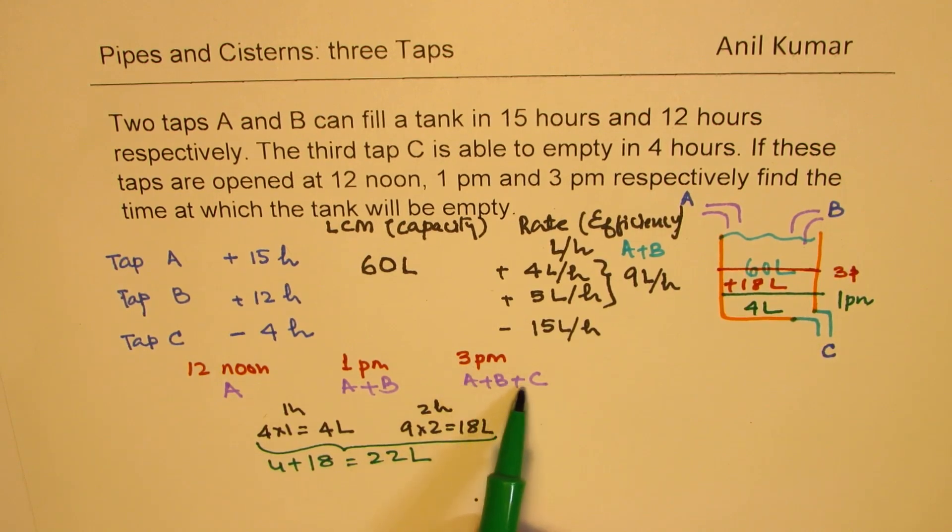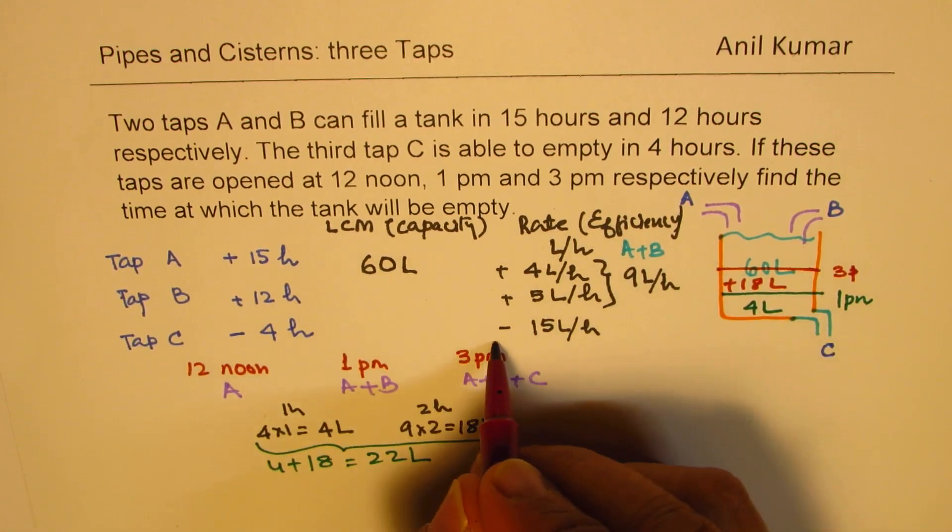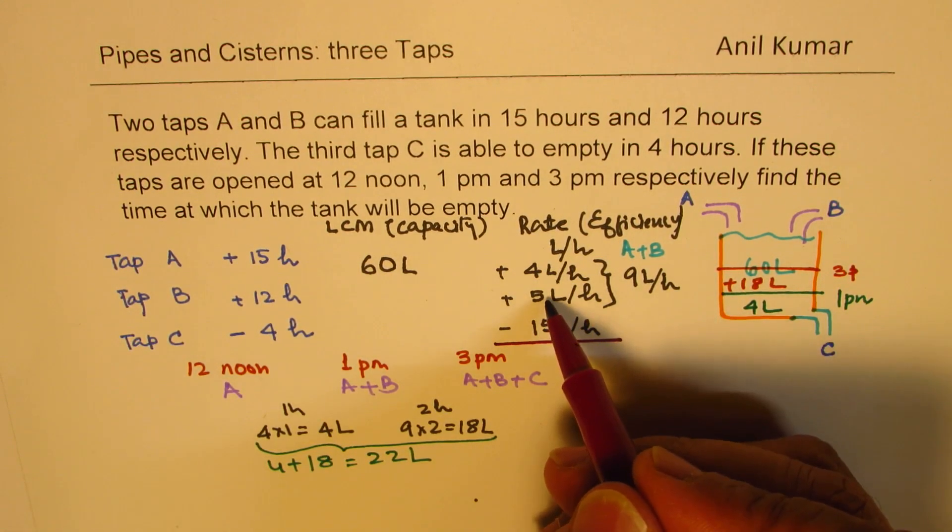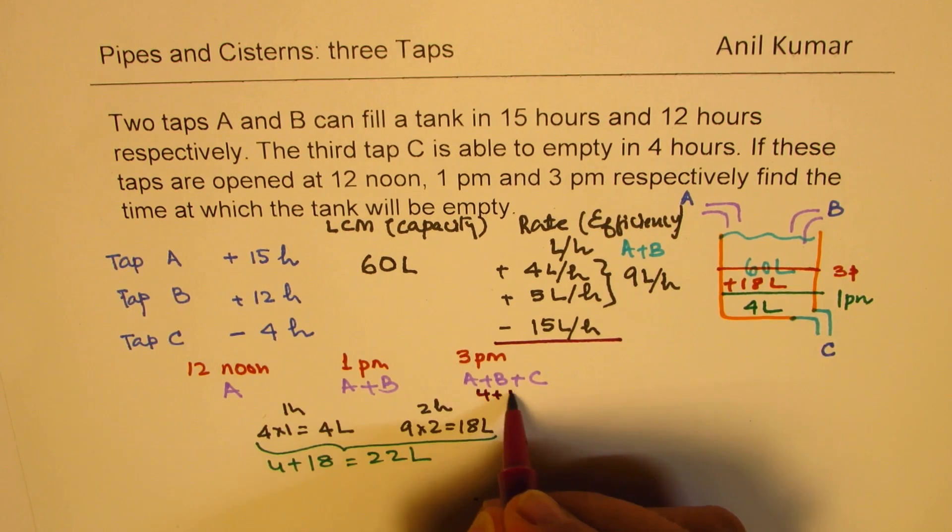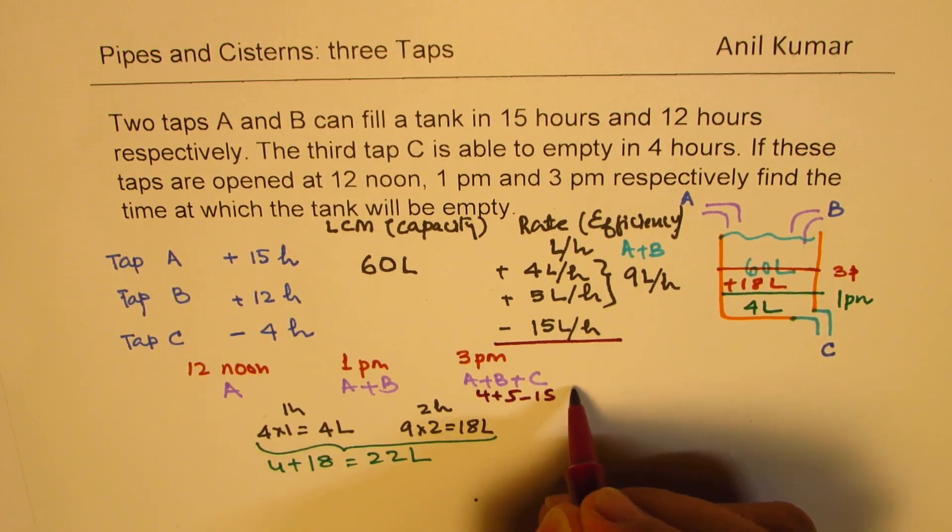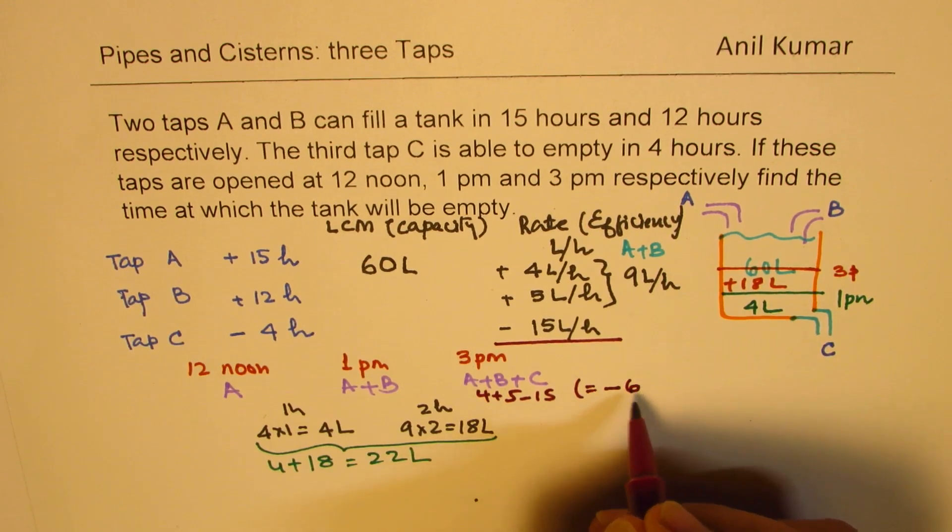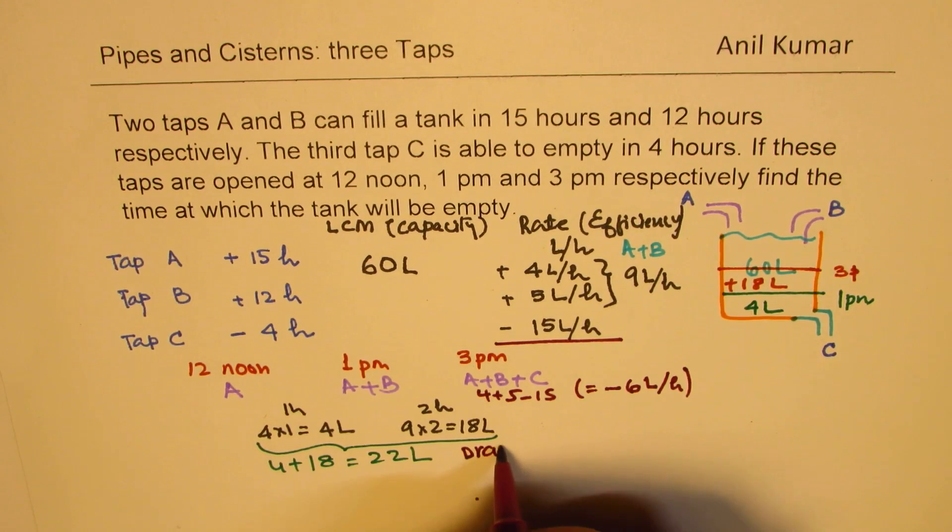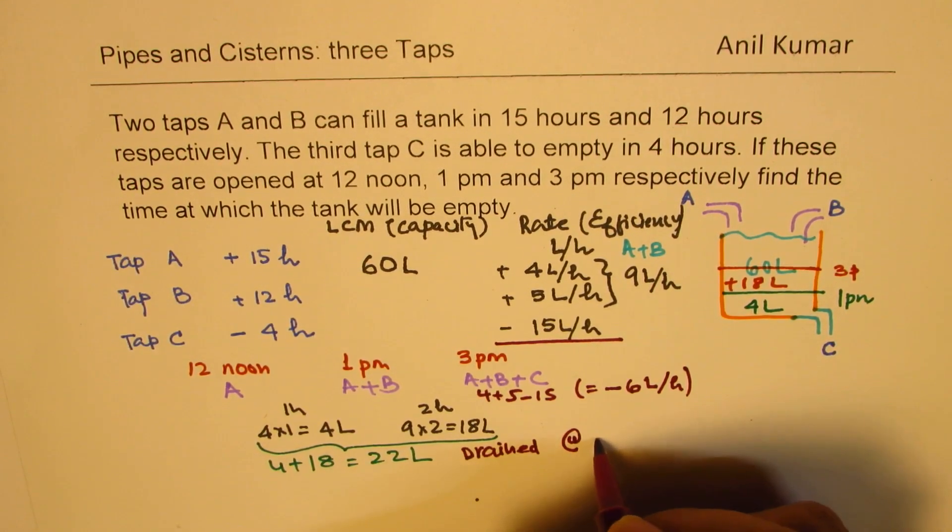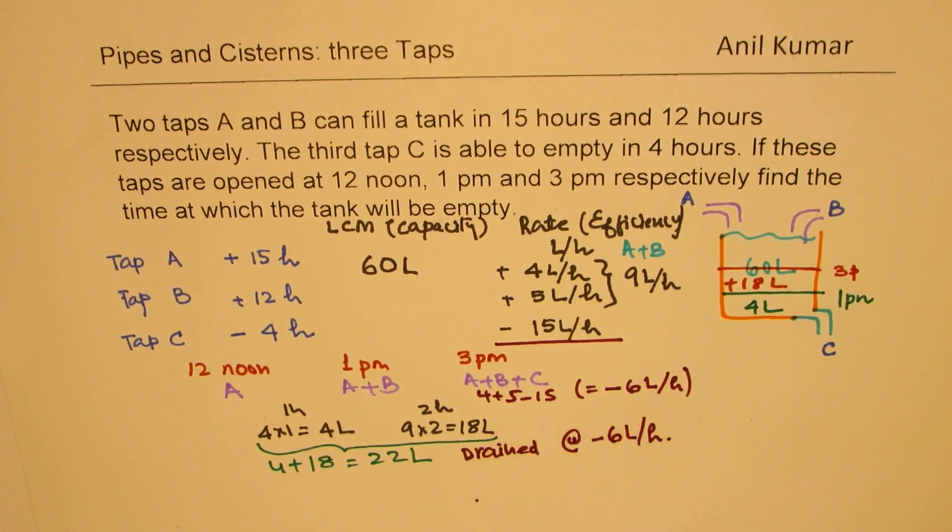So you can see from here that we have in all 22 liters. And now at 3 p.m., C is also opened. When you open up tap C, at this stage, the total rate is 5 plus 4, 9, take away 15. So the rate here is actually equal to minus 6 liters per hour. So nothing is added up. But all this 22 liters is drained at the rate of 6 liters per hour.